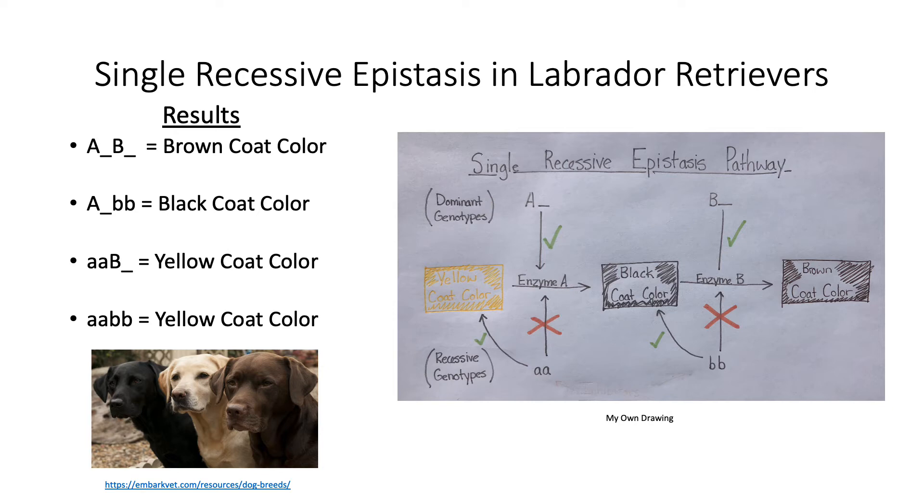If any form of the dominant allele of the yellow coat color gene is expressed, whether it be homozygous or heterozygous, it would not mask the second locus, thus allowing the dog to produce enzyme A, moving down the epistasis pathway to the second locus, the black coat color gene.